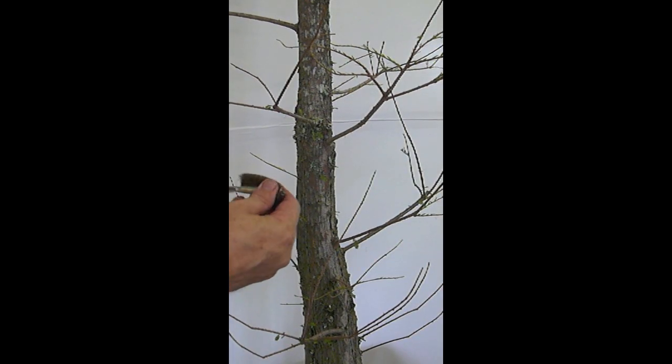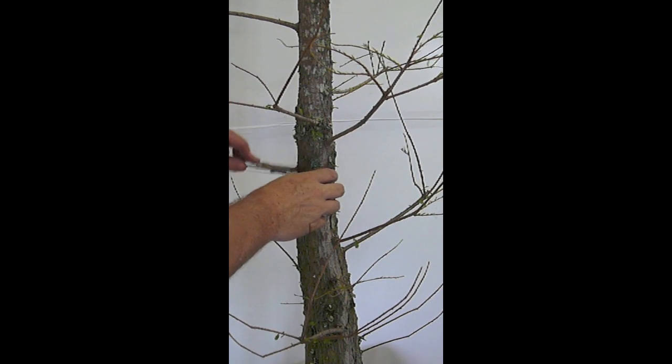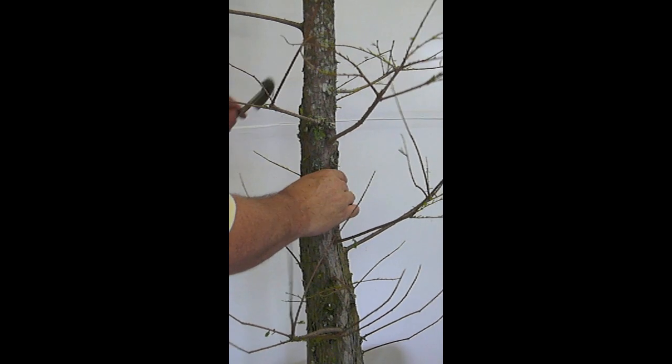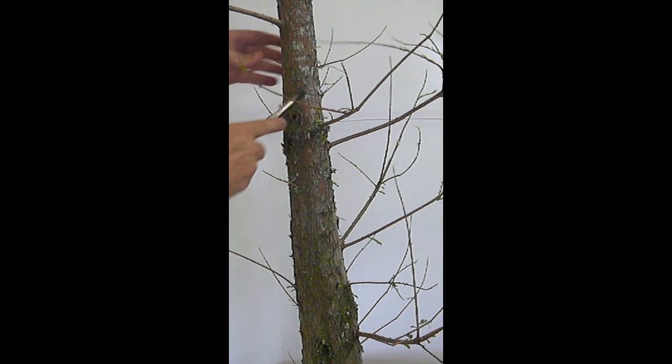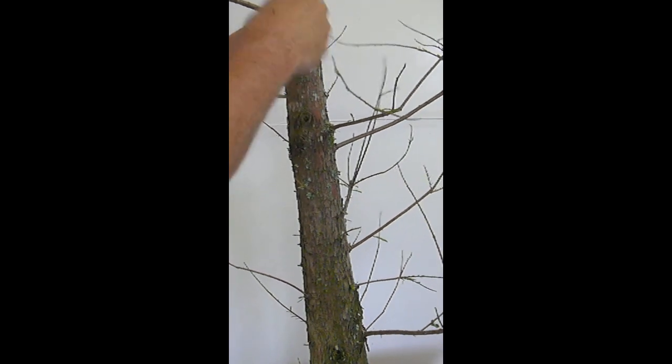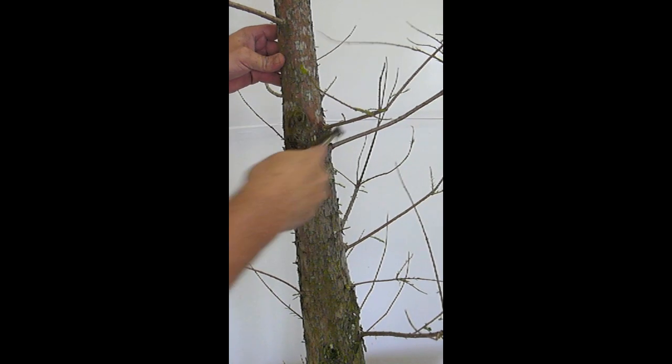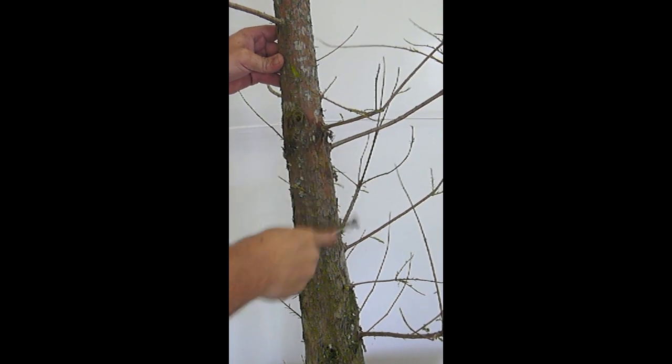All right, the next thing I want to do is I want to clean up the trunk and I'm just going to use a brass bristle brush to clean some of the lichens and moss and stuff that's growing on the trunk. And then I can also flake off some of the old flaky bark, so I'll take care of that next.